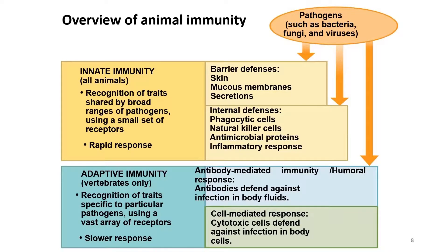This is a summarization of the innate immunity and adaptive immunity systems. All animals have the innate immunity system, while only vertebrates have the adaptive immunity system. Innate immunity recognizes a broad range of pathogens using a small set of receptors, while adaptive immunity recognizes traits specific to particular pathogens using a vast array of receptors. Innate immunity is a rapid response, while adaptive immunity is a slower response.